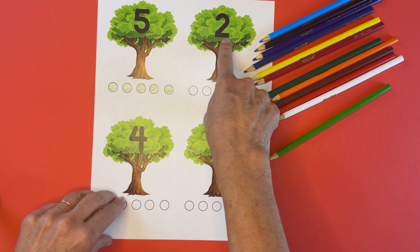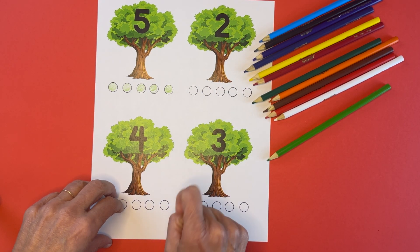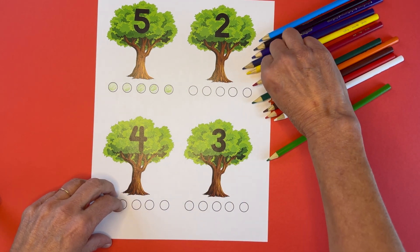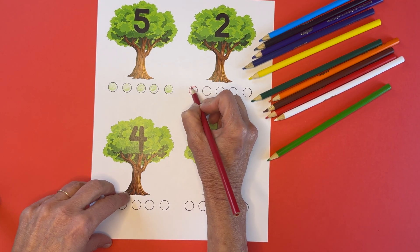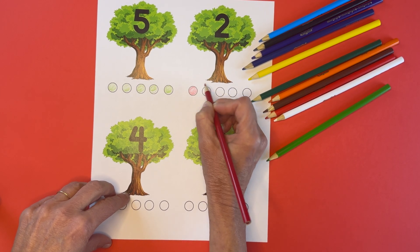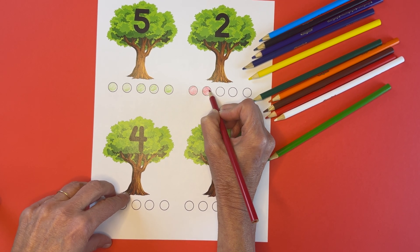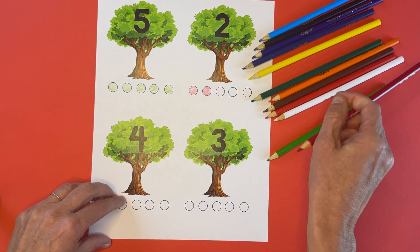This tree has the number two on it. That means we're going to have how many apples down below? You're right. Two. And this time I'm choosing red. Here we go. One, two, two red apples under the number two apple tree.